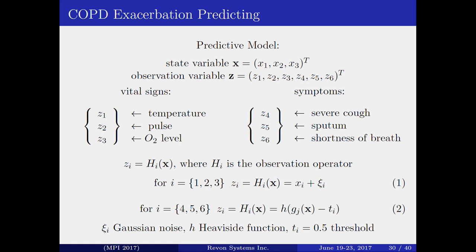The symptoms include severe cough, a coughing fit, sputum — which is expectorate that changes color and volume — and shortness of breath. We hypothesize a functional relationship where symptoms depend on vital signs. This is a naive assumption, but we want to make a prediction. Our state variables are vital signs, and observation variables are symptoms. We will also use a Kalman filter.